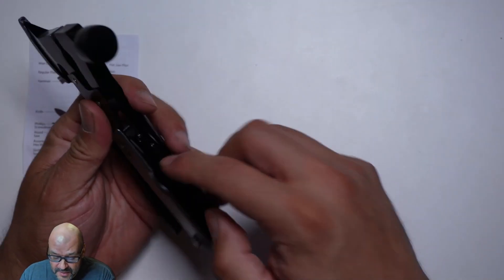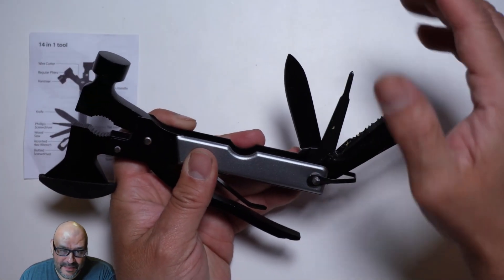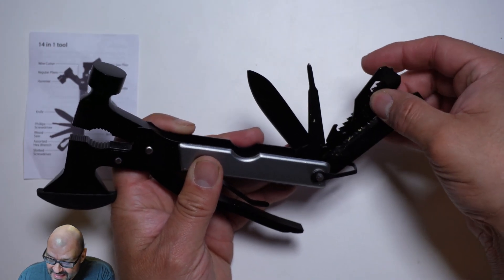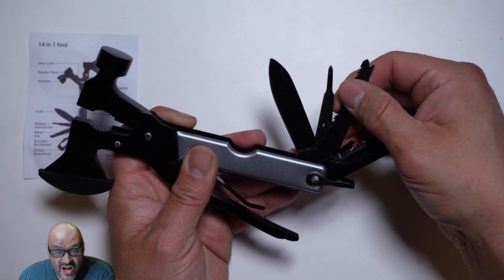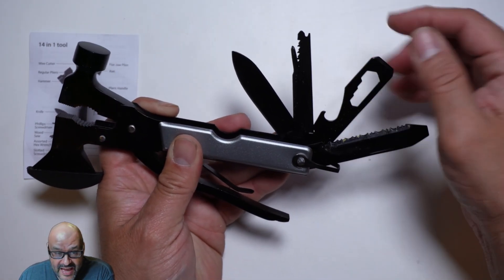Now let's open up all the tools. First of all, they give you a knife, right? That's kind of like the main thing. Of course, they give you a Phillips. They give you an actual saw.